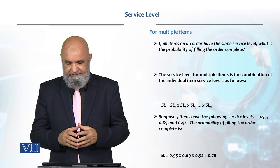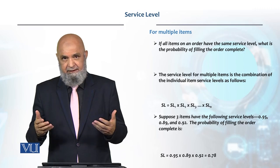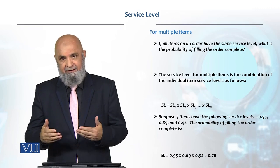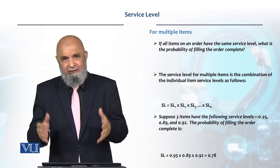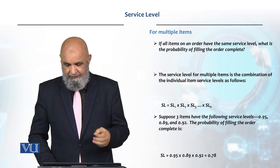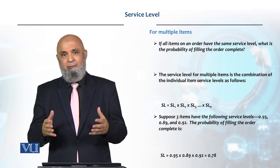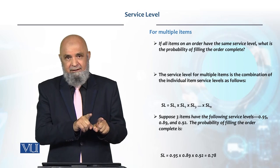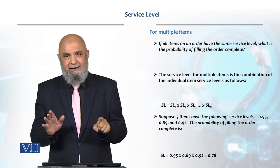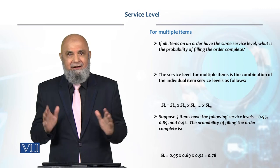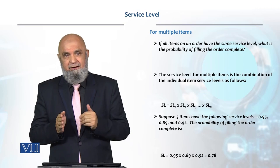For example, suppose there are three items. Item A probability is 0.95, second is 0.89, third is 0.92. So now we have to see the probability that we will fill the entire order. So how do we do it? We multiply them, which gives us 0.78. So individual items may be at 95 percent, but that does not mean that the whole order can be 95%, because if you multiply then you will have actual service level like 0.78.